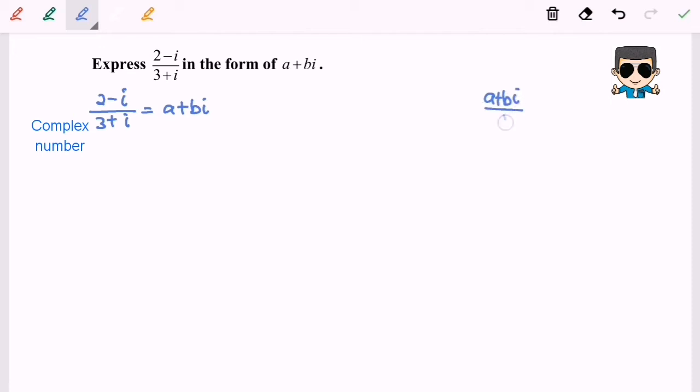So the denominator for the right hand side is a rational number, which is 1. So that's why we have to multiply the conjugate for the left hand side.